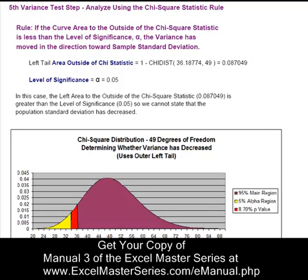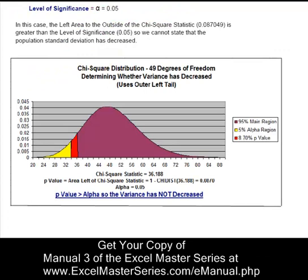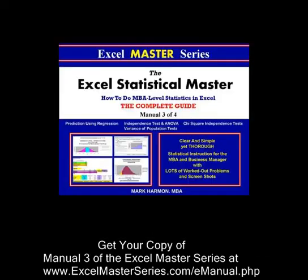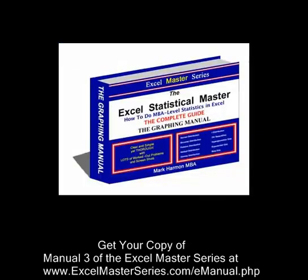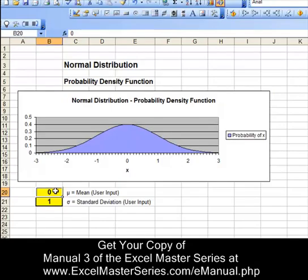That's the emphasis of this book — that's Book Three: regression, the chi-squared independence and variance test, and the independence test with ANOVA. You can get that right on the website. It's very reasonably priced, and it's a good book that's easy to go through.